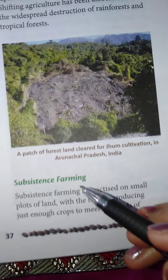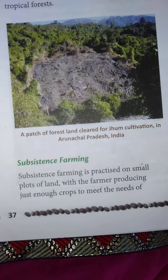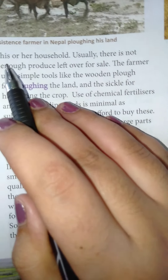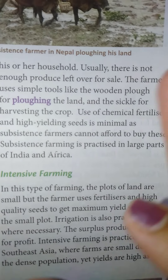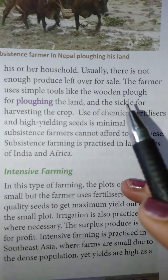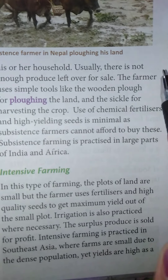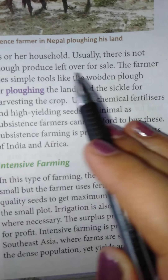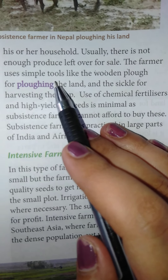What is subsistence farming? It is practiced on small plots of land, with a farmer producing just enough crops to meet the needs of his family. Subsistence means for living. In this type of farming, the farmer uses only a small plot or small area in which the household or family needs are completed. Usually, there is not enough produce left over for sale — no produce is left for sale.